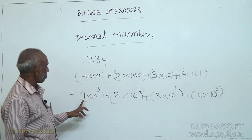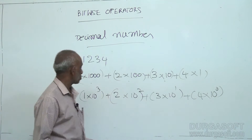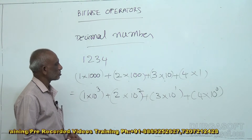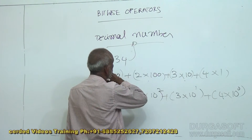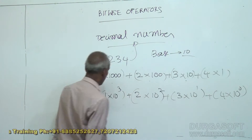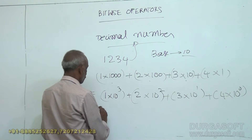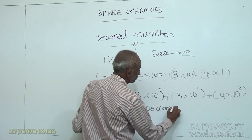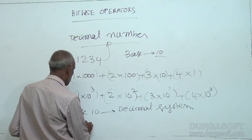So this number is written as one into ten cube plus two into ten square plus three into ten power one plus four into ten power zero. So one is in ten power three, here it is ten power two, ten power one, ten power zero. This is how we calculate the value of a decimal number. Here the base is ten, so that is why we used ten cube, ten square, ten power one, ten power zero. This is called the decimal system and the base is ten.